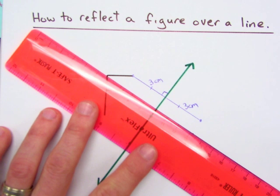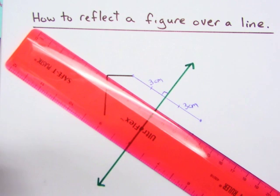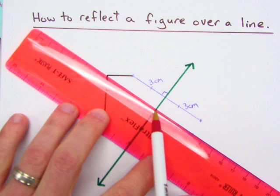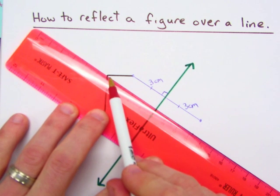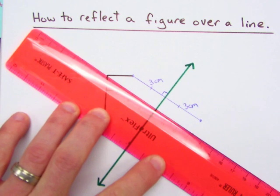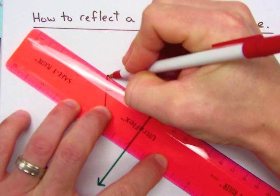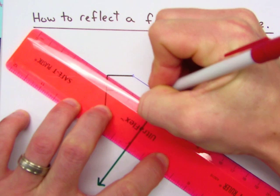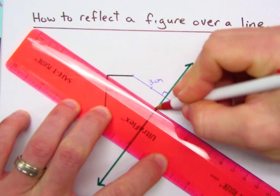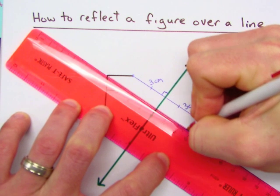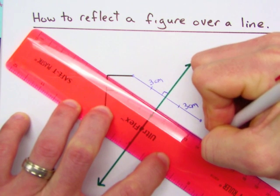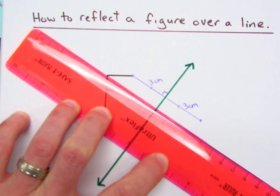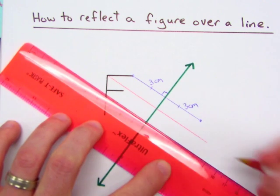So align your ruler perpendicular. Measure the distance. So now I'm about 4.3 centimeters. I go 4.3 centimeters there, and then 4.3 centimeters on the other side. And I make my point.